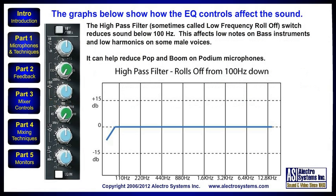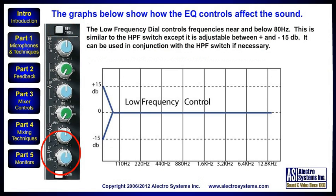The following graphs show how the EQ controls affect the sound. The high-pass filter, sometimes called the low-frequency roll-off switch, reduces sound below 100 Hz. This affects low notes on bass instruments and low harmonics on some male voices. It can help reduce pop and boom on podium microphones. The low-frequency dial controls frequencies near and below 80 Hz. This is similar to the high-pass filter switch, except it's adjustable between plus and minus 15 decibels. It can be used in conjunction with the high-pass filter switch if necessary.